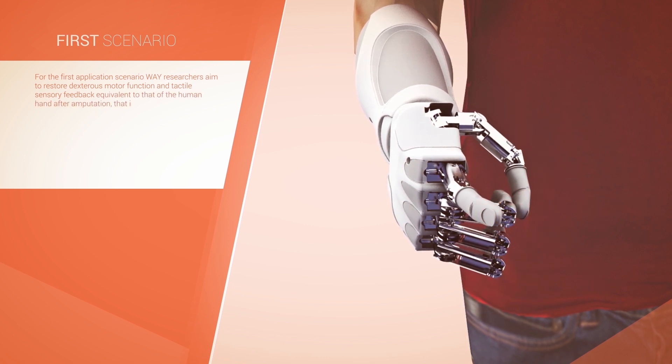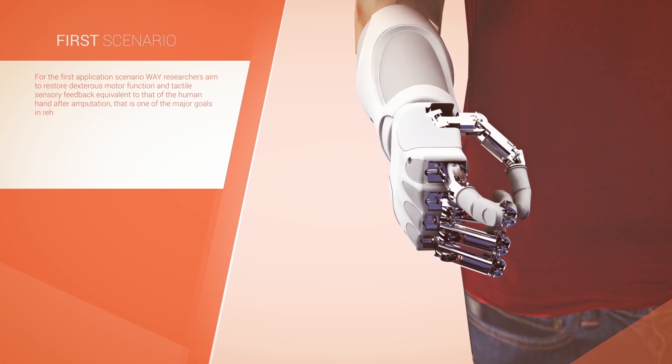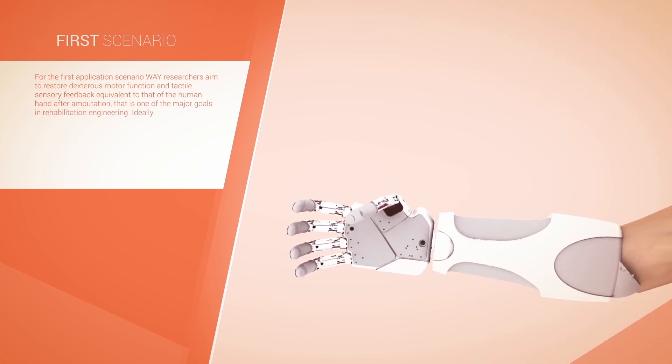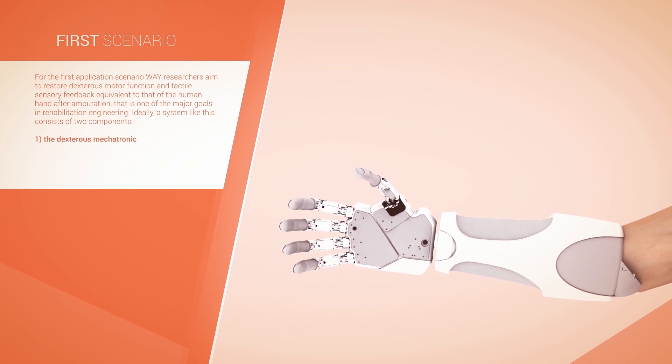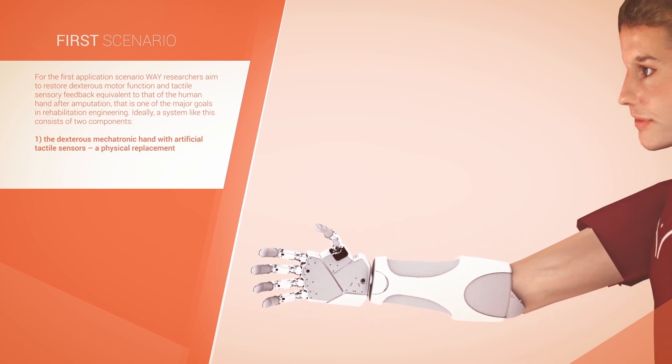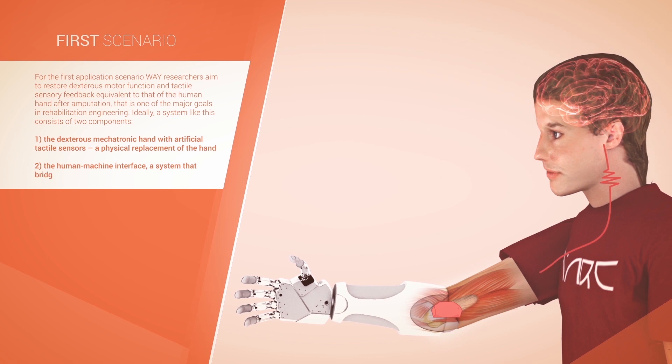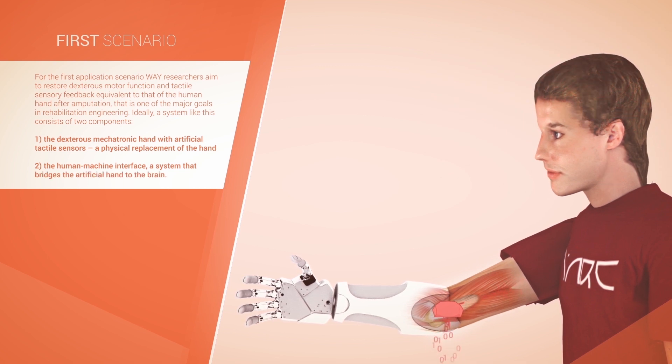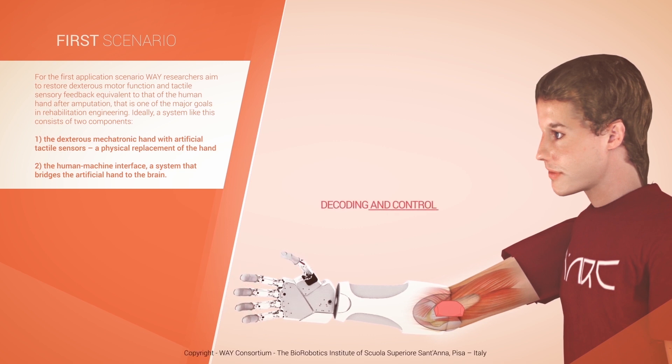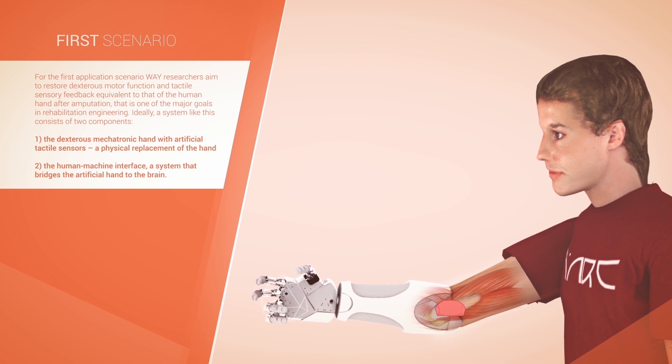For the first application scenario, researchers aim to restore dextrous motor function and tactile sensory feedback equivalent to that of a human hand after amputation. Ideally, such a system consists of two components: the dexterous mechatronic hand with artificial tactile sensors, a physical replacement of the hand, and the human-machine interface, a system that bridges the artificial hand to the brain in a bidirectional manner.